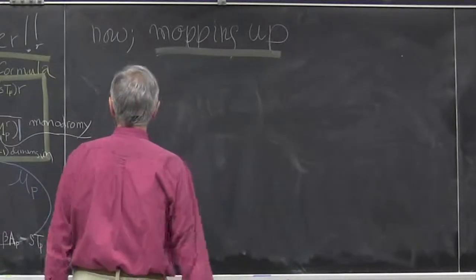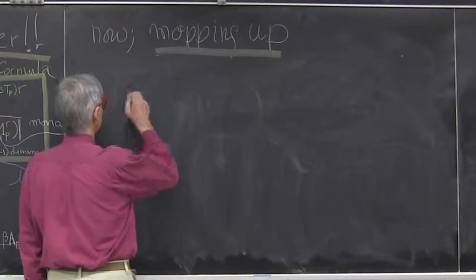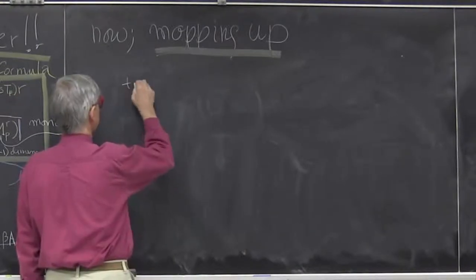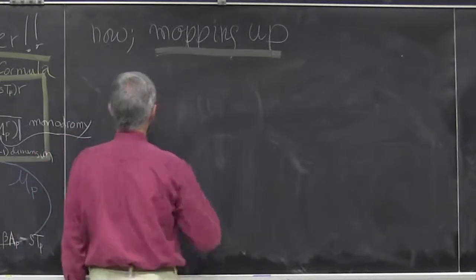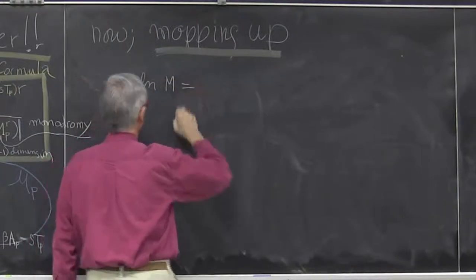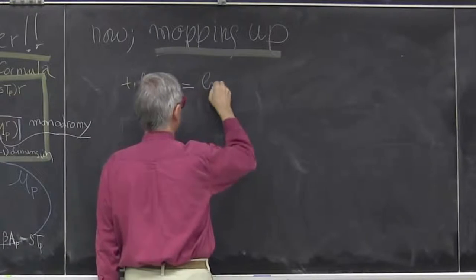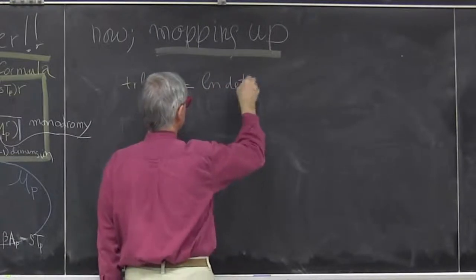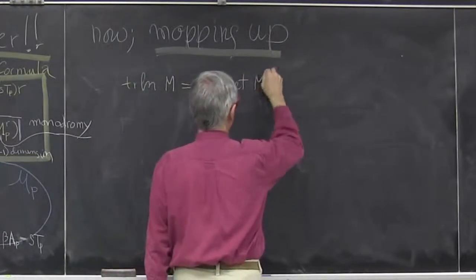Now, the main identity is the usual one: the trace of the log of a matrix is the log of the determinant of a matrix.